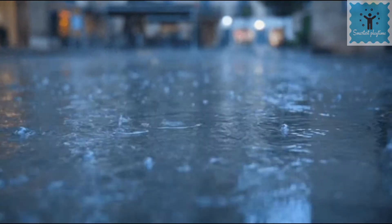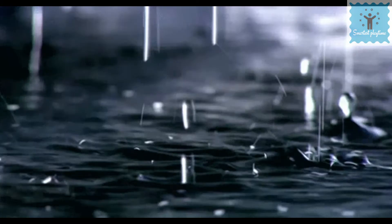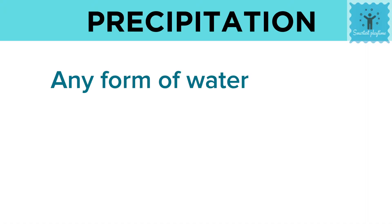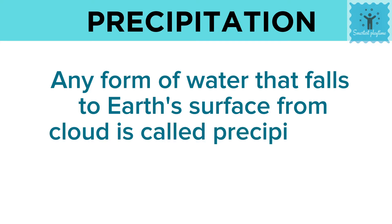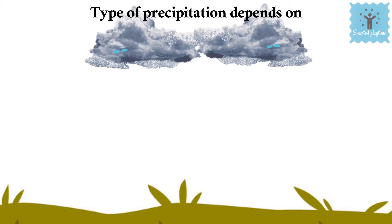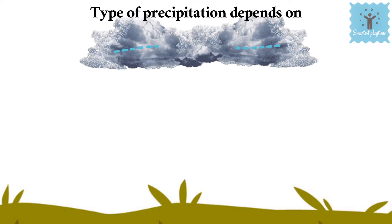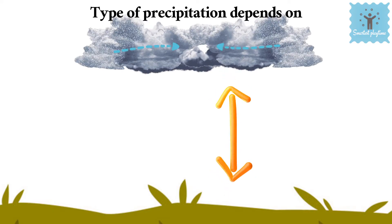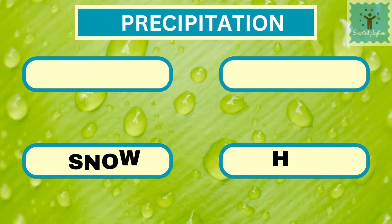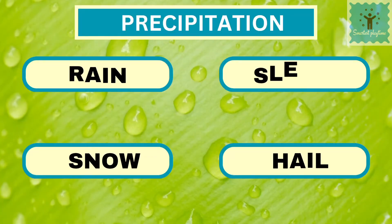We all enjoy rain, but have you wondered how this water falls on the earth and in what form? Any form of water that falls to the earth's surface from clouds is called precipitation. It occurs in different forms — the type of precipitation depends on both the conditions inside the clouds and the conditions of the air between the clouds and the ground. Precipitation normally occurs in four forms.